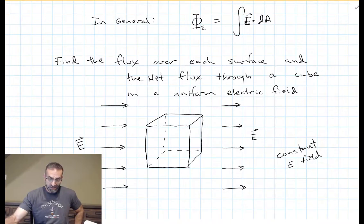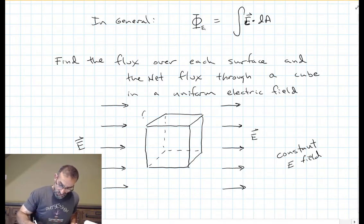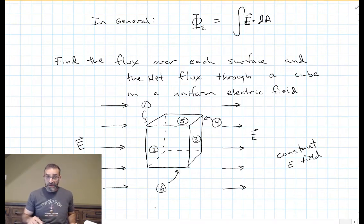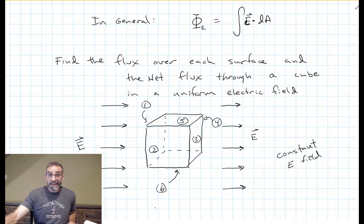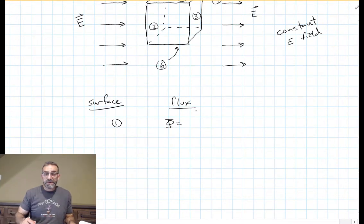Let's do this little exercise: find the flux through each surface and the net flux through the cube for a cube sitting in a uniform electric field. Let's number the surfaces — I'll call the one back there one, the face two, three, four, five can be the top, and six can be the bottom. So we've numbered all six sides of our cube. Find the flux through each of those six sides and the net flux through the cube.